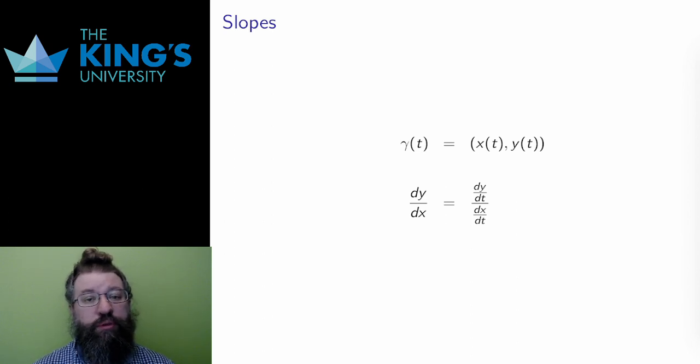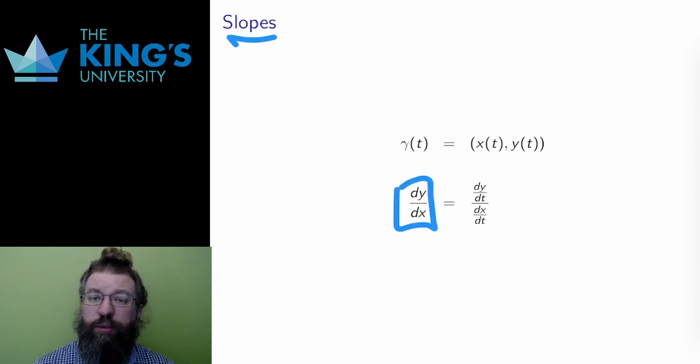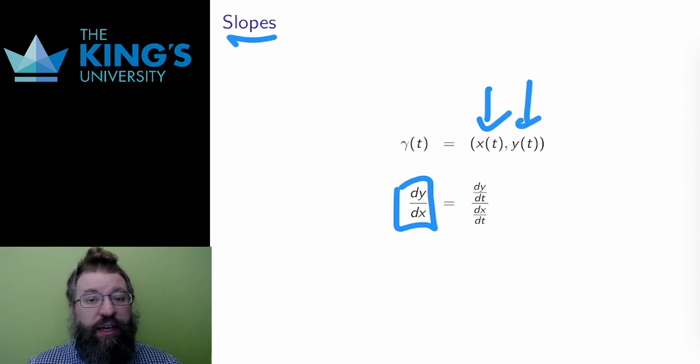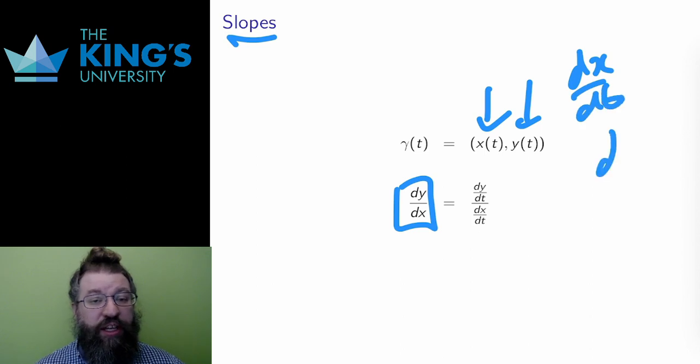So let me start with slopes. The slope is the rate of change of y in terms of x. In a parametric curve, both x and y depend on t. And there are two time derivatives, dx/dt and dy/dt. How, then, does y change in terms of x?